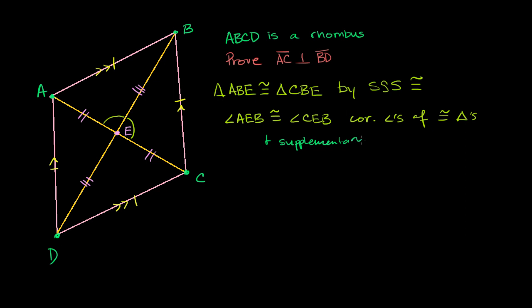Supplementary. So we have, these two are going to have the same measure, and they need to add up to 180 degrees. So if I have two things that are the same thing, and they add up to 180 degrees, what does that tell me? So that tells me that the measure of angle AEB is equal to the measure of angle CEB, which must be equal to 90 degrees. They're the same measure, and they are supplementary.